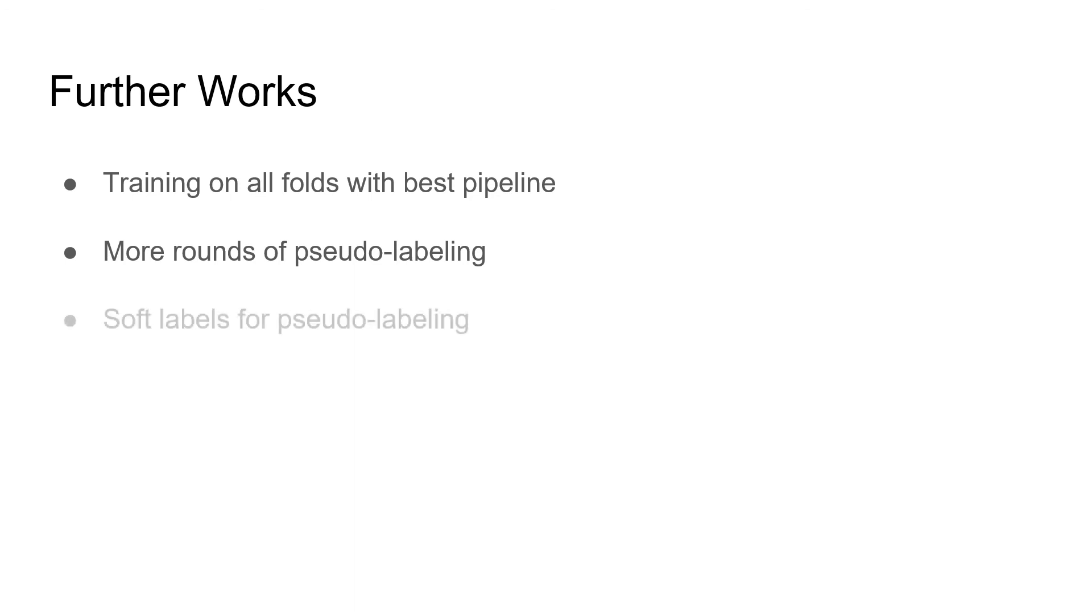As I said earlier, we believe that there is still plenty of room for improvement. Simply training on all folds with our best pipeline could easily boost our score. Also, more rounds of pseudo-labeling could potentially increase the score too. Another thing that might be helpful is using soft labels for pseudo-labels in combination with label smoothing on ground truth data, which usually works best when annotations are noisy. Finally, a minor thing we haven't tried was fine-tuning the weights of loss functions.